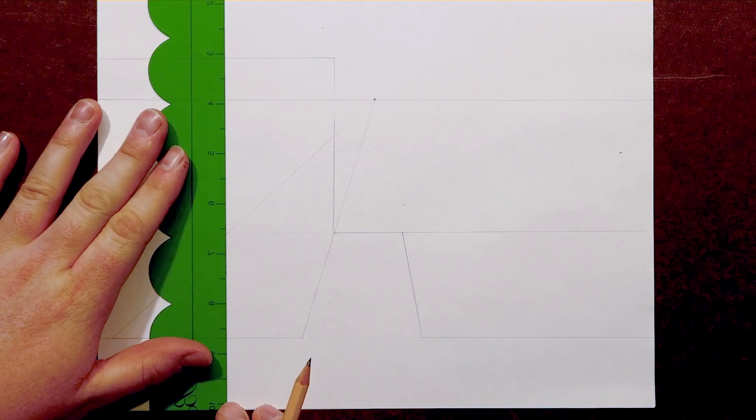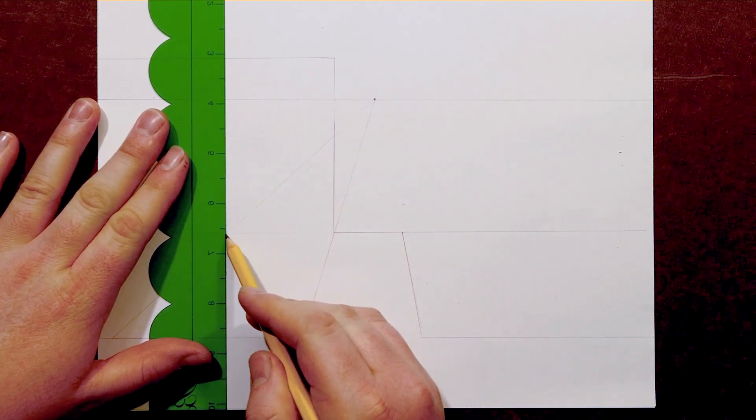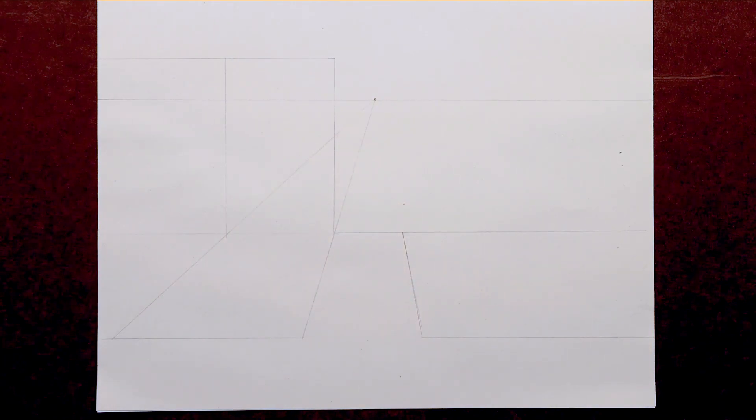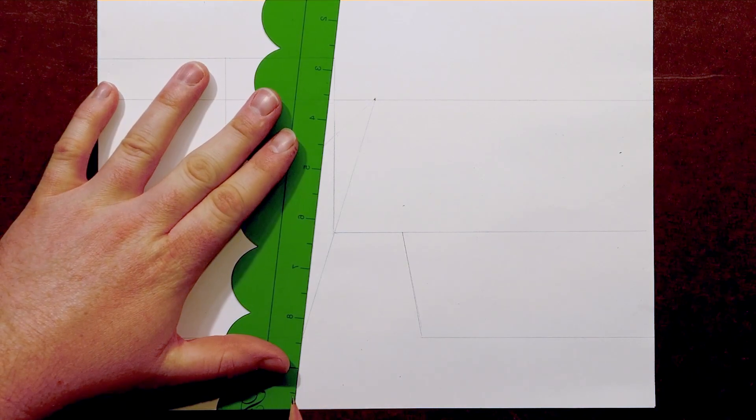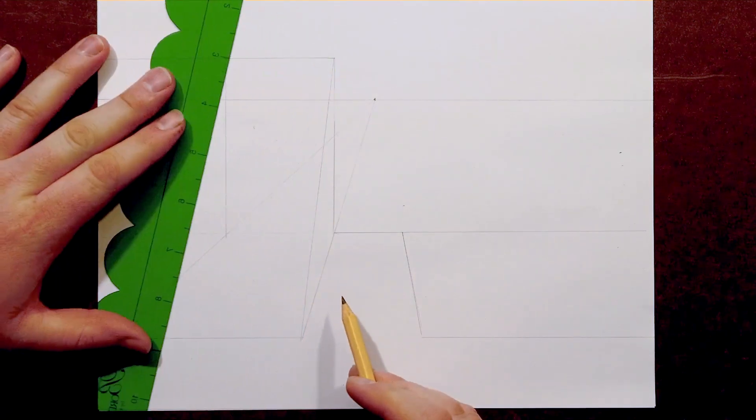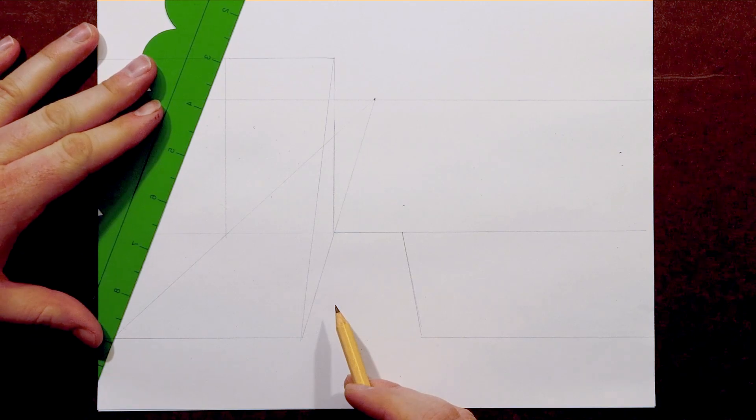Where that line intersects, I can then bring a vertical line to complete that shape. Finally, I'll connect the far corners, creating a wedge-shaped container for what will become my staircase.